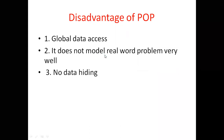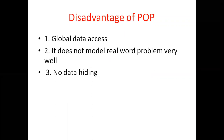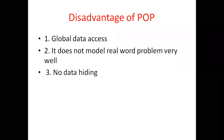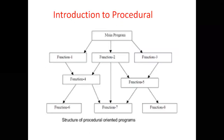The second issue is that procedural-oriented programming does not model real-world problems very well. There is also one more drawback: it is not working the way the real world works. The third issue is no data hiding — any person can access any other person's data. To remove such problems, the object-oriented programming concept came into the market.